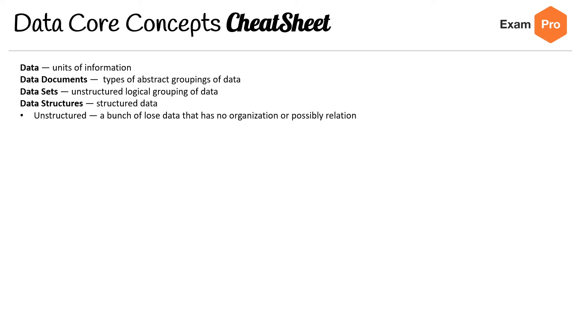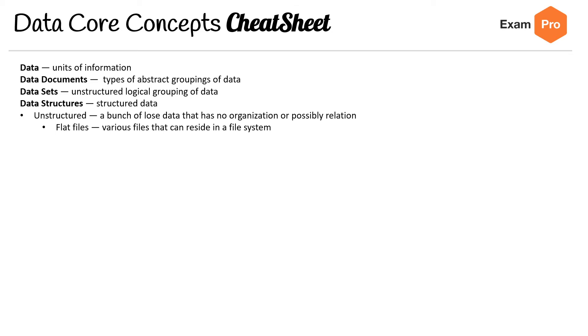There are variants. Unstructured is a bunch of loose data that has no organization or possible relation — we're talking about flat files here, various files that can reside in a file system. Semi-structured formats include fees, XML, JSON, and Parquet.